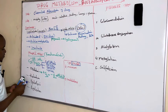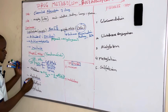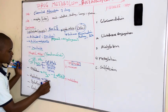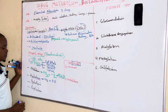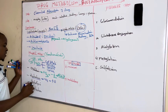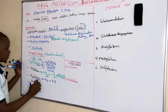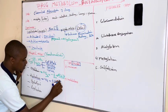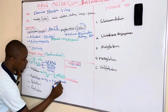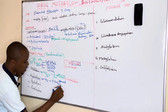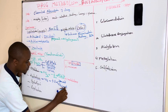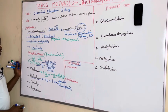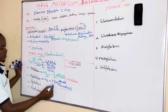Reduction reaction is the opposite of oxidation — here we remove oxygen or add hydrogen. Drugs that undergo reduction reactions include isoniazid, which is an anti-TB drug, and the antibacterial drug chloramphenicol. They undergo reduction to make them polar for easy elimination.